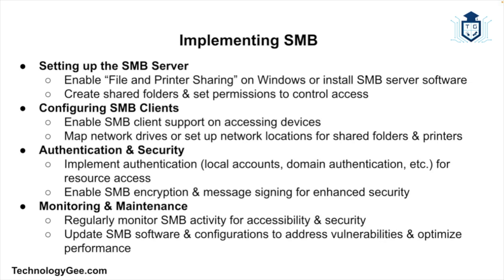Implementing SMB involves configuring both server and client components. First, set up the SMB server by installing and configuring the SMB server software — on Windows this means enabling the file and printer sharing feature, creating shared folders, and setting appropriate permissions. Then configure the SMB client by ensuring SMB client support is enabled on devices that will access the shared resources, and map network drives or set up network locations to access shared folders and printers.